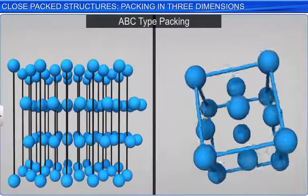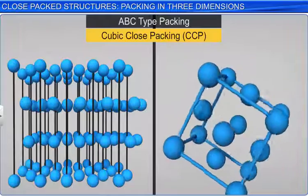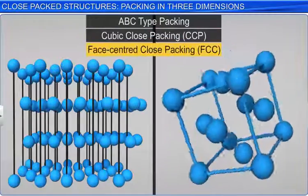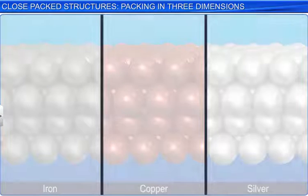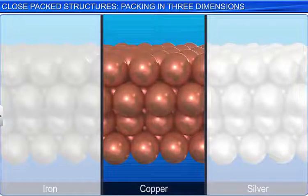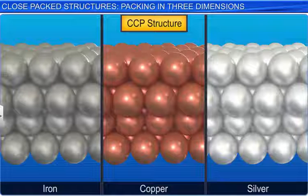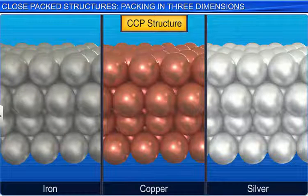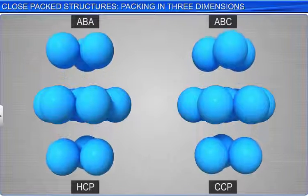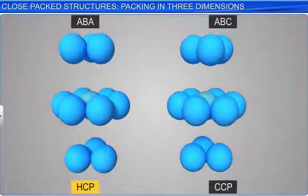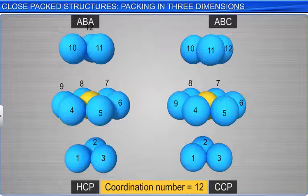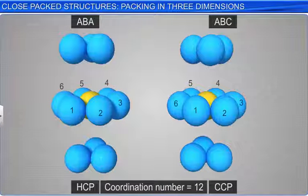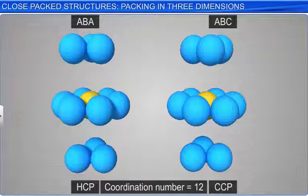This arrangement is also called cubic close packing, CCP, or face-centered close packing, FCC. Metals like iron, copper, and silver crystallize in CCP structures. As can be seen in hexagonal close packing and cubic close packing, a sphere has the coordination number 12. It is in contact with six spheres in its own layer, three more in the layer above, and three more in the layer below.